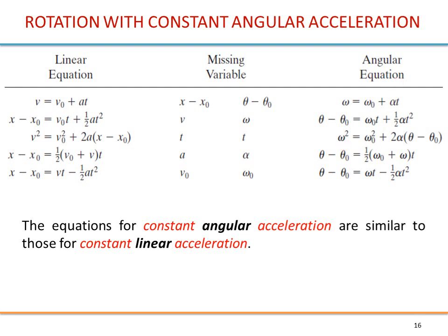You have seen something very similar: x equals half of a t squared plus v0 t plus x0 in linear motion. Indeed, the angular equations are analogous to the linear equations. This is the equivalence of the variables: speeds correspond, time remains time, accelerations correspond, and initial velocities correspond. The equations for constant acceleration in angular motion are similar to those for constant linear motion — the important thing is constant acceleration; it doesn't matter what you are talking about.